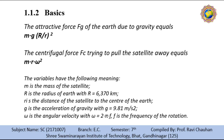A satellite orbits around the earth depending on the application. These orbits can be circular or elliptical. Satellites in circular orbits always keep the same distance to the earth's surface. Following the simple law, the attractive force Fg of the earth due to gravity equals m · g · (R/r)², where R is the radius of the earth and r is the distance of the satellite to the center of the earth.